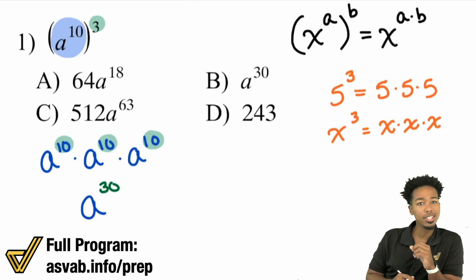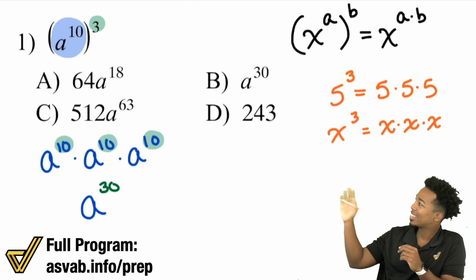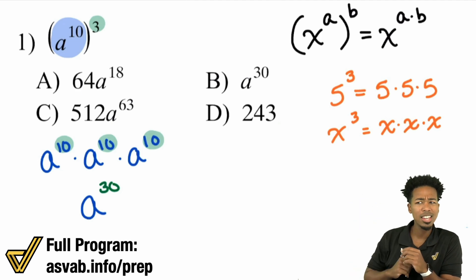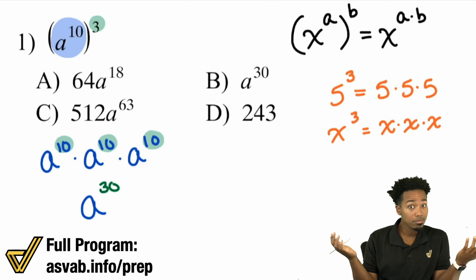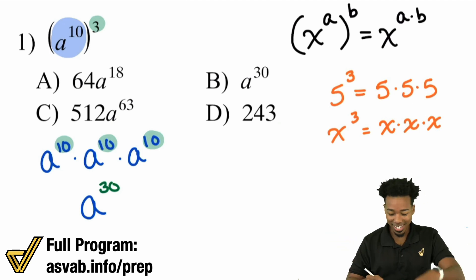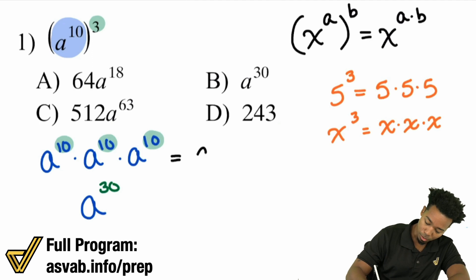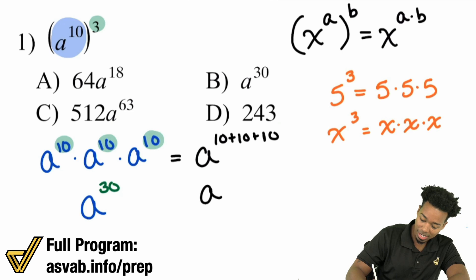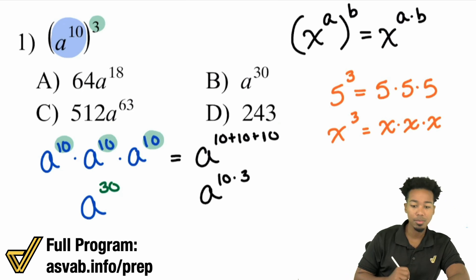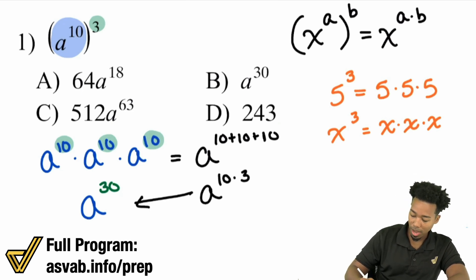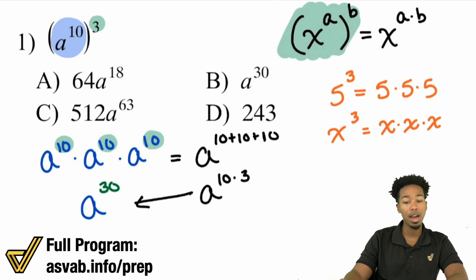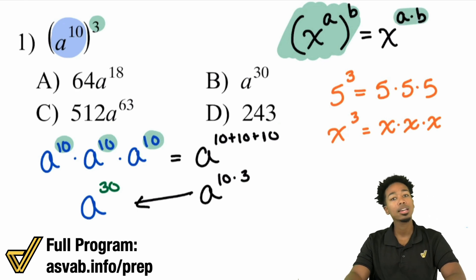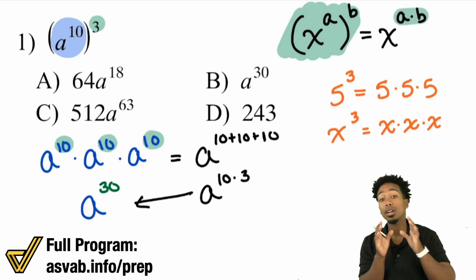But what's another way to get 30? If I add 10 three times — 10 plus 10 plus 10 — isn't that the same as 10 times 3? It absolutely is. So the answer is a to the power of 10 plus 10 plus 10, which is the same as a to the power of 10 times 3. That's why the shortcut is: if you have a power to a power, you simply multiply those exponents.